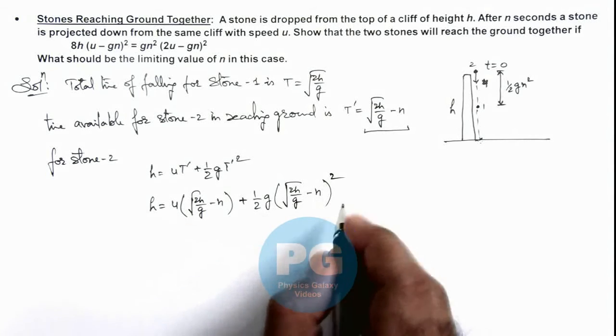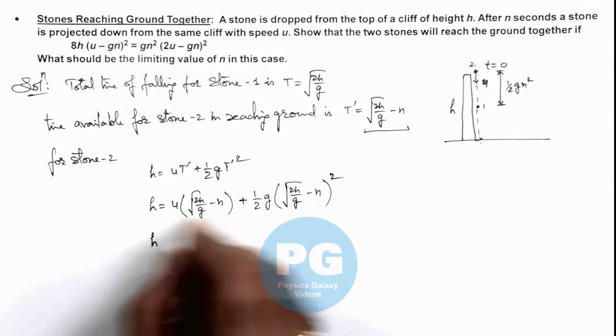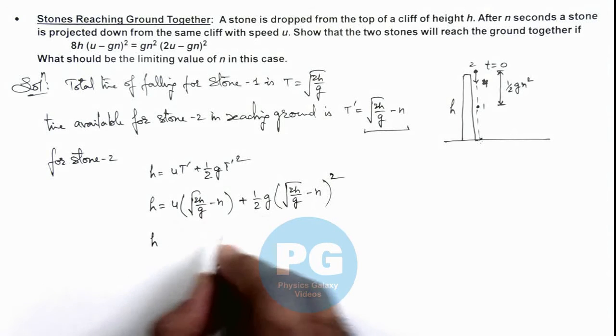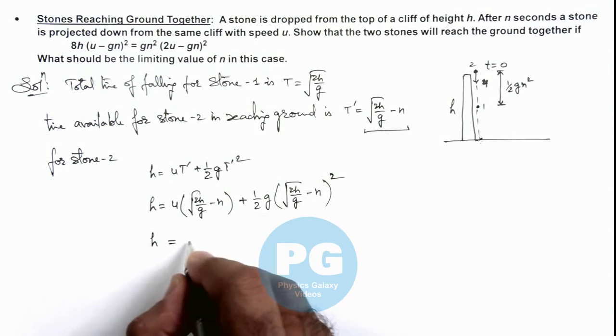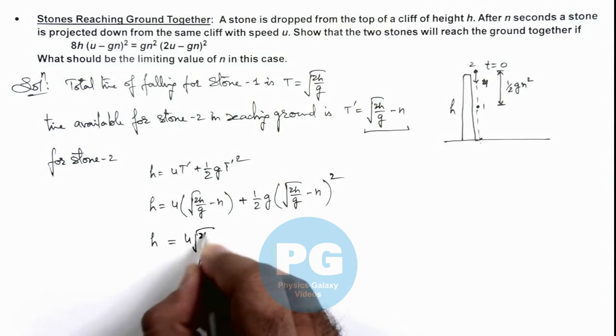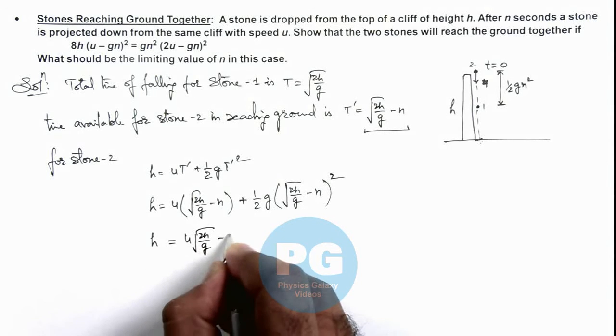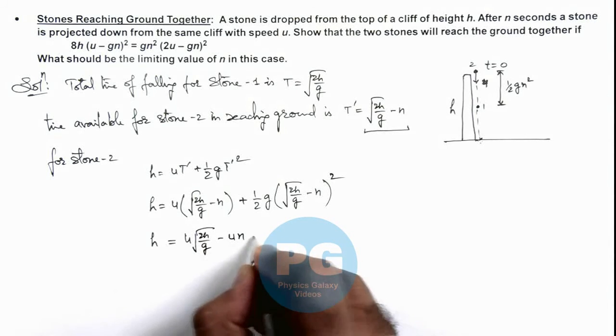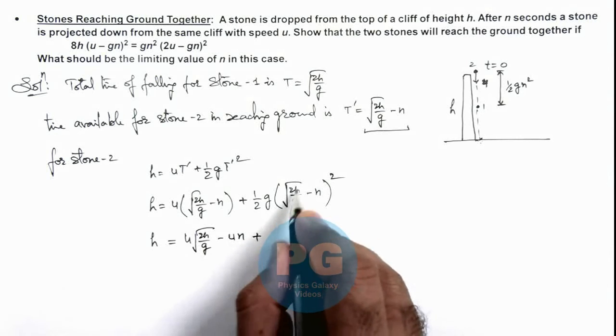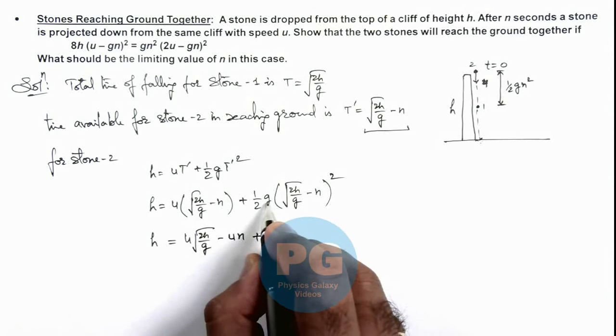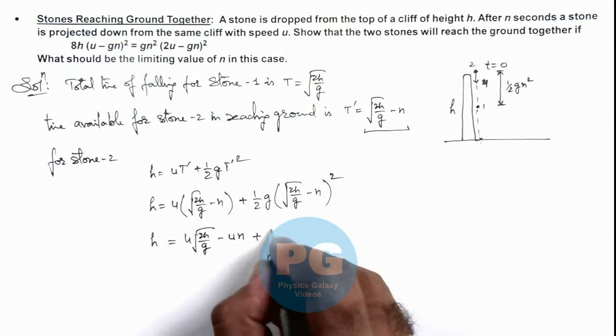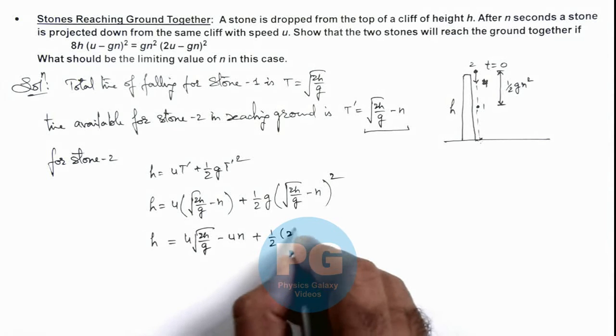If we open the whole expression and simplify, you can see here h is equal to u multiplied by root 2h by g minus u n, plus, if we square it, n multiplied by g. Here you can see this is half multiplied by 2h, plus half g n square, minus...